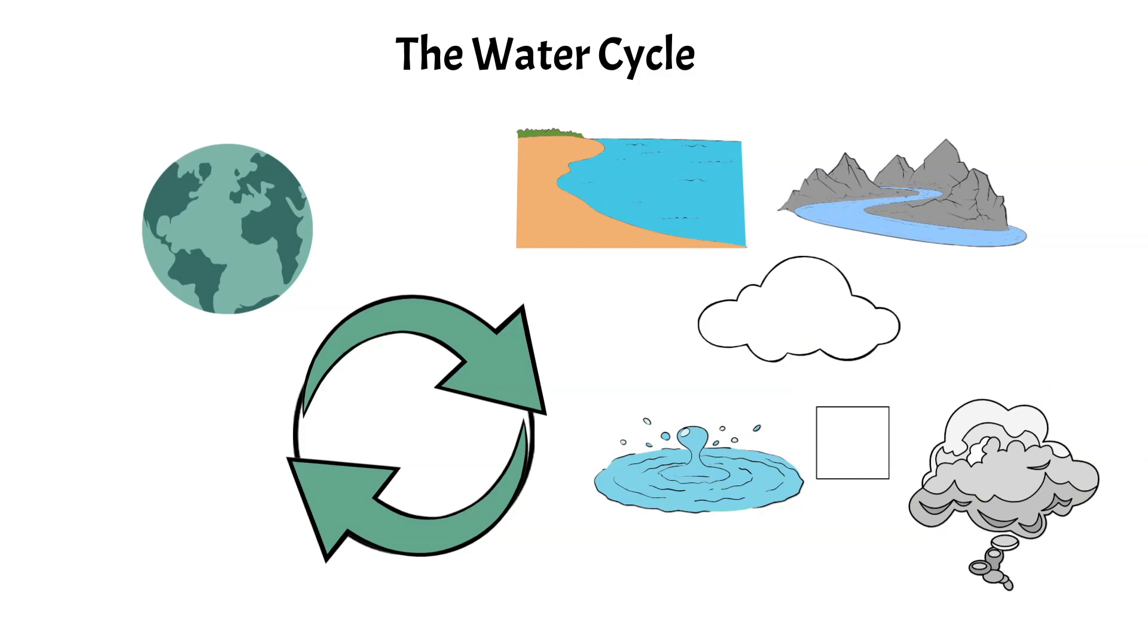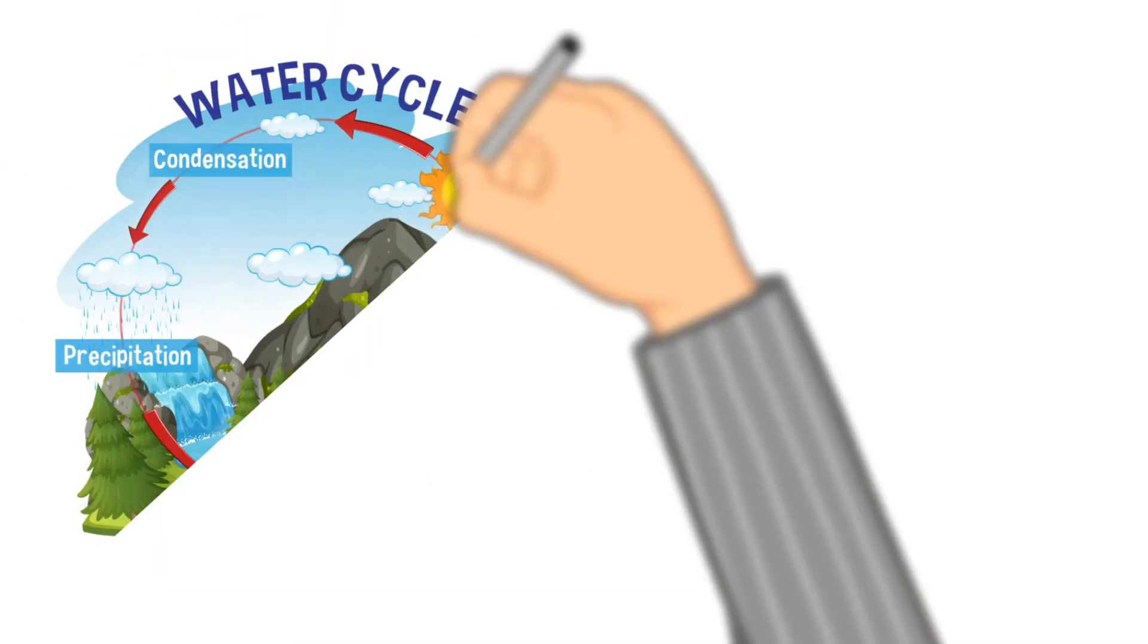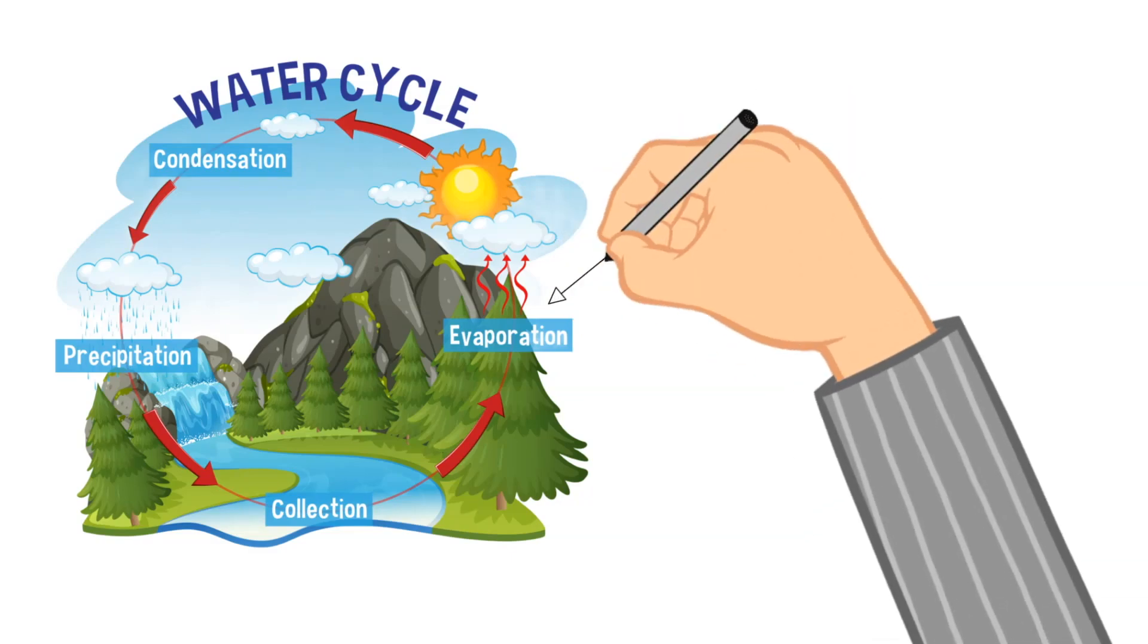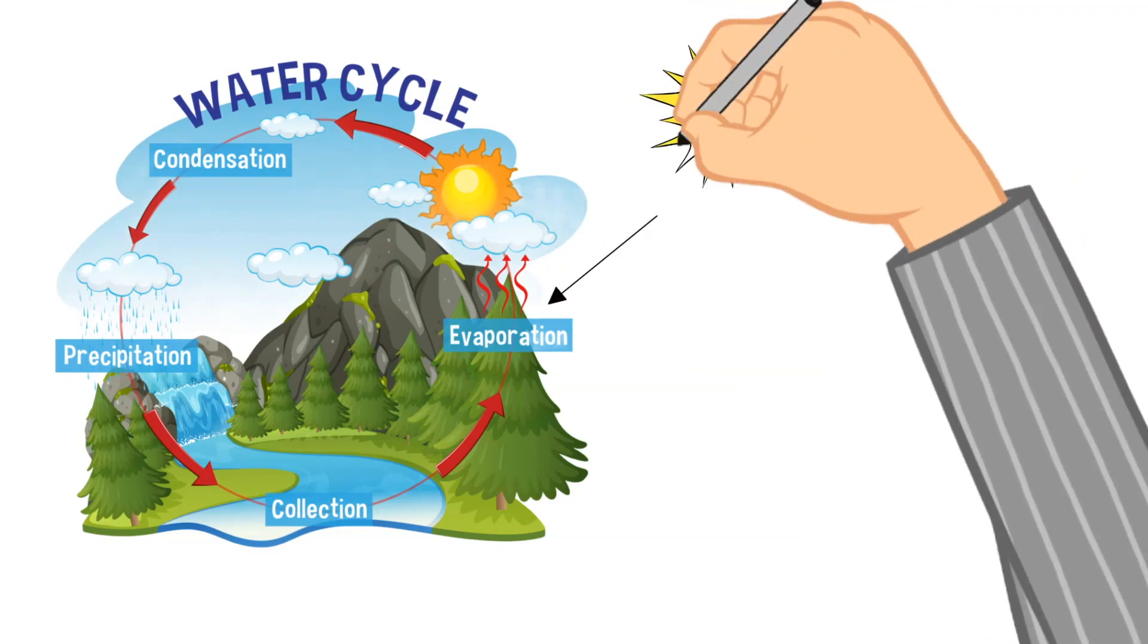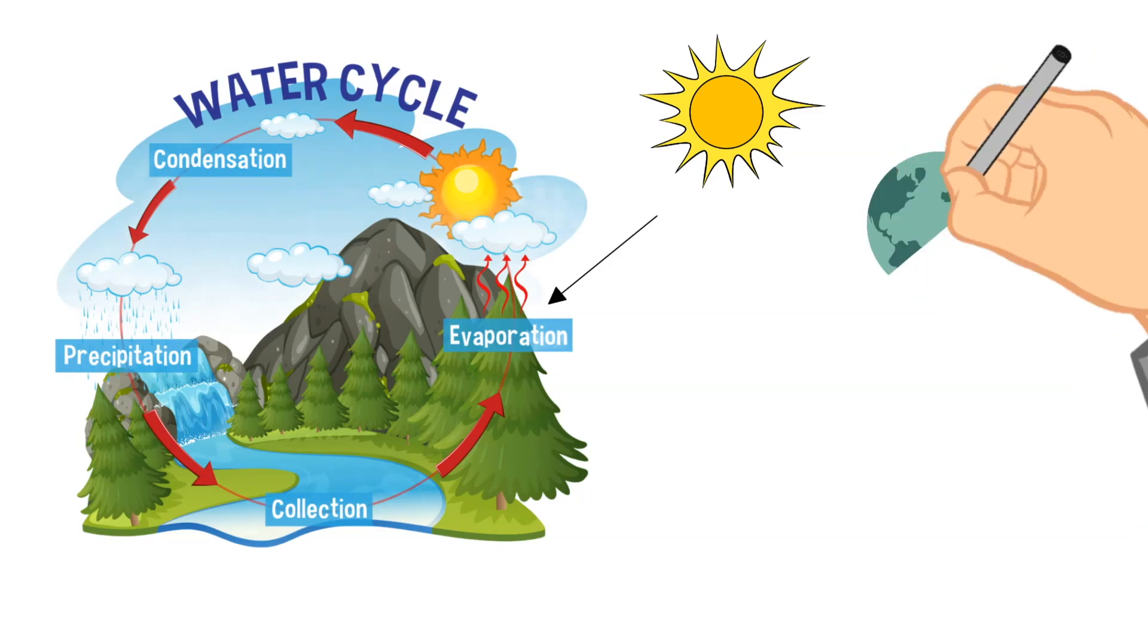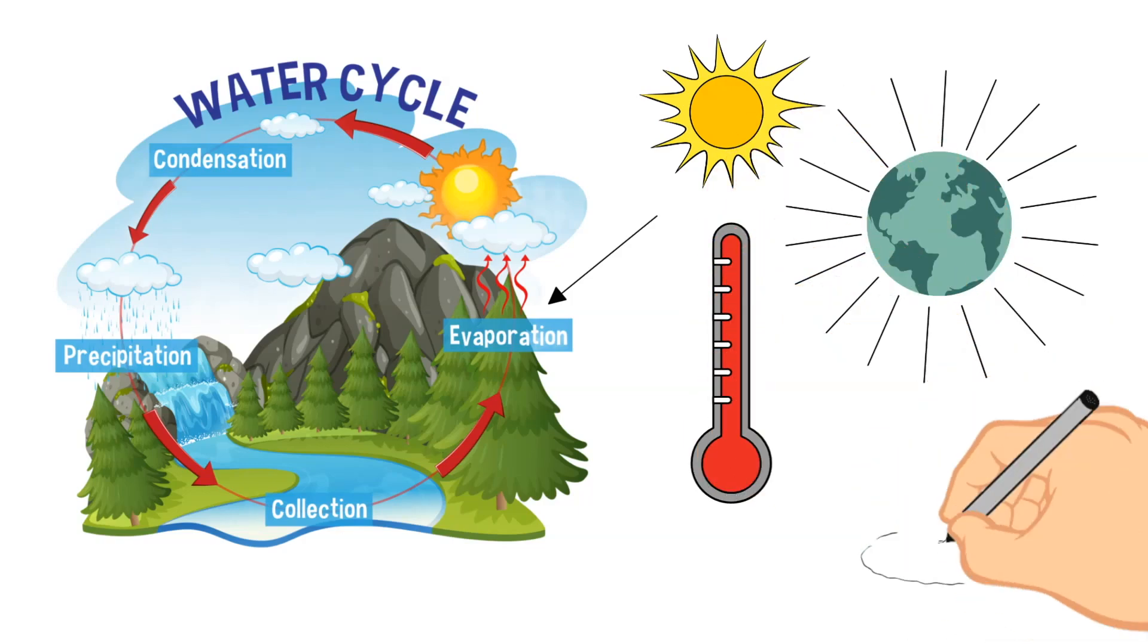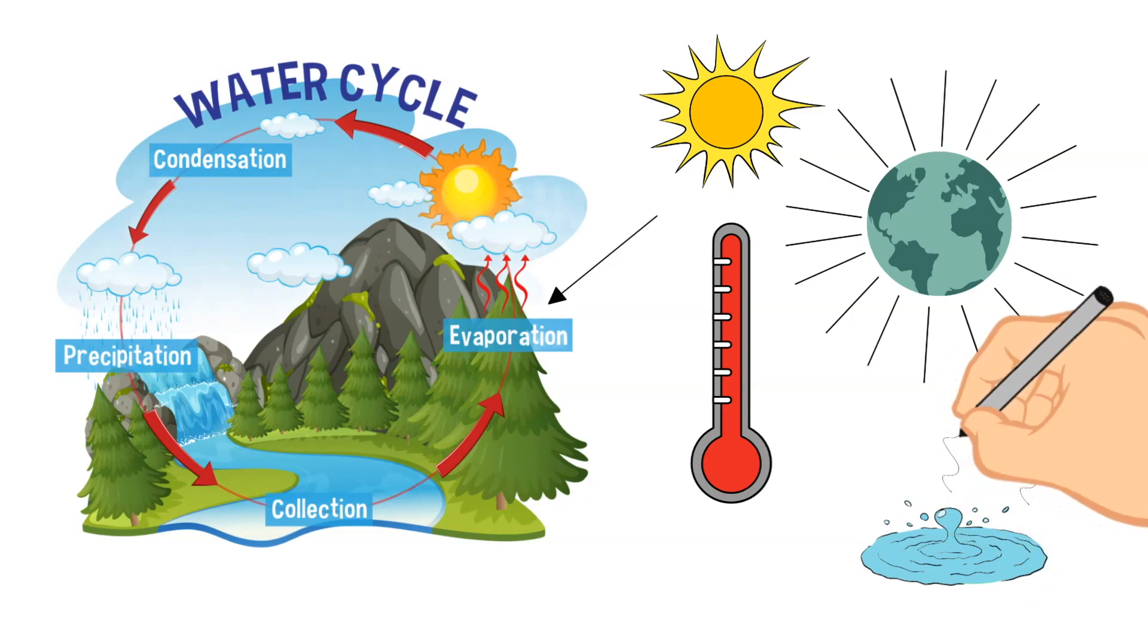So let's jump into the water cycle at evaporation. What is evaporation? The energy from the sun will heat up the surface of the earth. And when it does this, it causes the temperature of the water in lakes, oceans, streams, and rivers to rise. And when this happens, this water evaporates into the air.